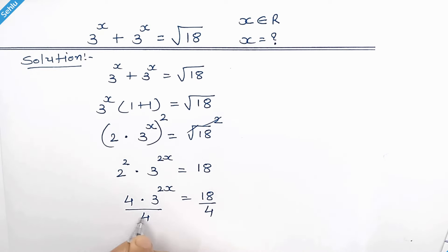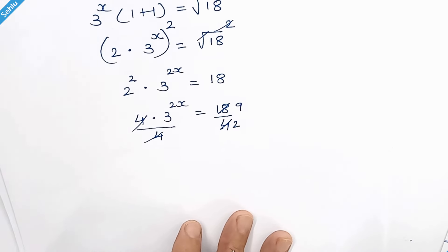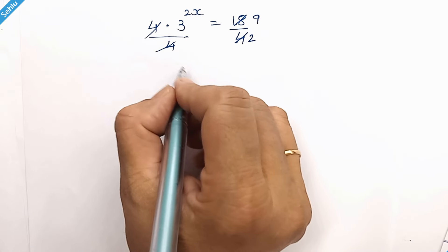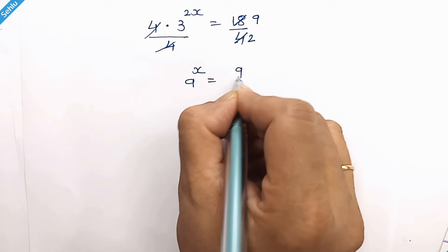Dividing both sides by 4, we simplify the equation. Since 3 squared is 9, we have 9 to the power x equals 9 over 2.